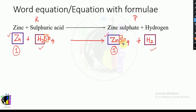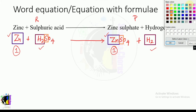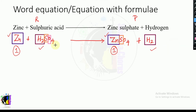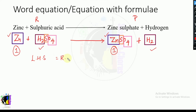Next, let us consider sulfur: there is one sulfur atom on the left and one on the right — sulfur is balanced. For oxygen: it is O₄ on the left and O₄ on the right. So completely, all atoms in this equation are balanced — the left hand side equals the right hand side.